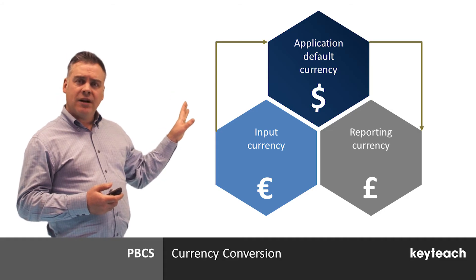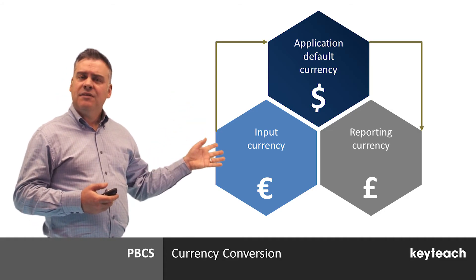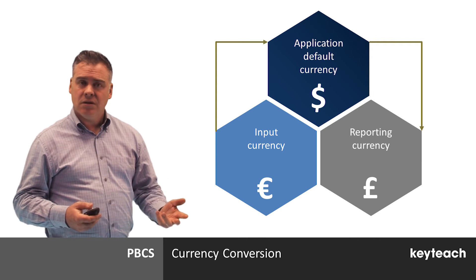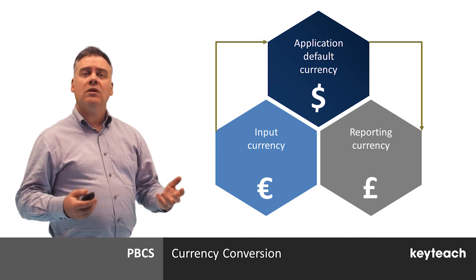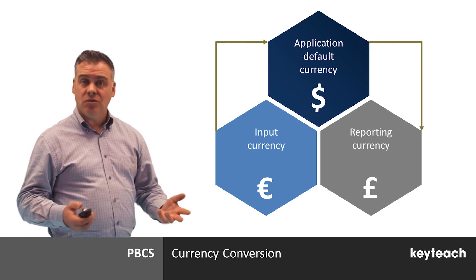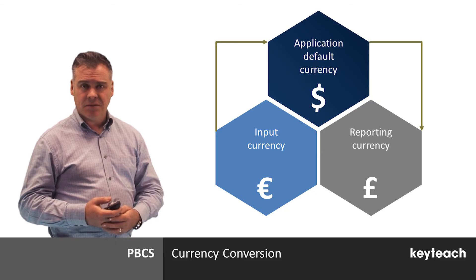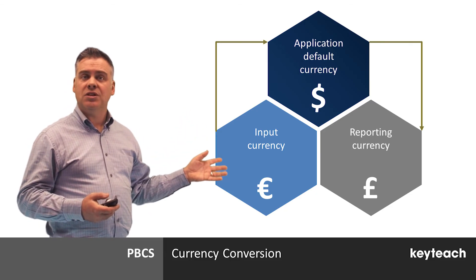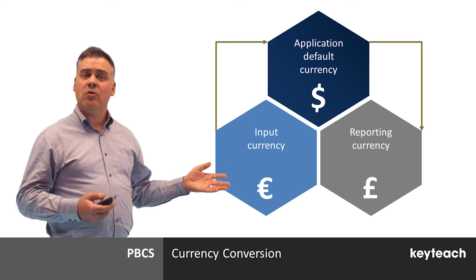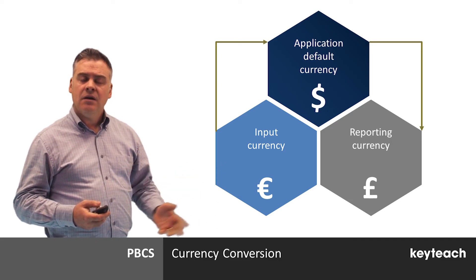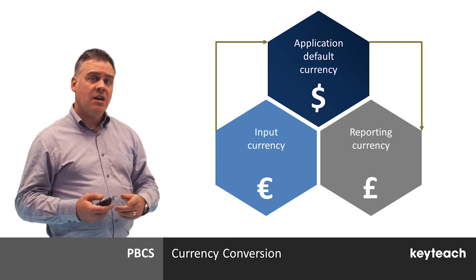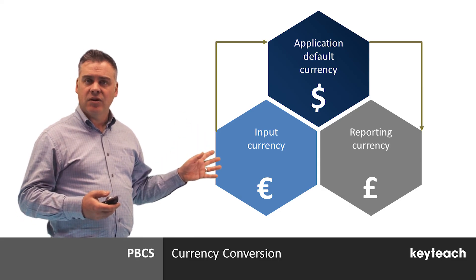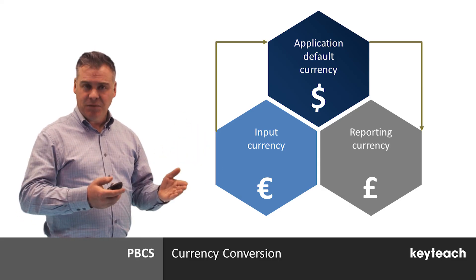An example of triangulation is shown here. If the application default currency is US dollars, rates will be loaded for all other currencies with respect to US dollars. If you then had some input data entered in euros that you wanted to report on in pounds sterling, the euro value would first be converted to US dollars and then converted from US dollars to GBP.